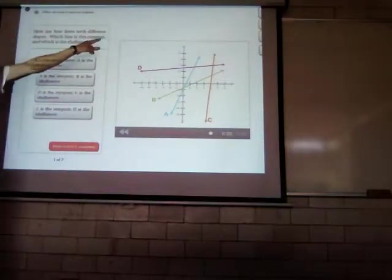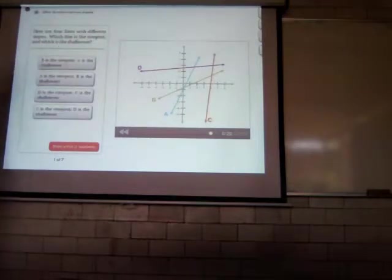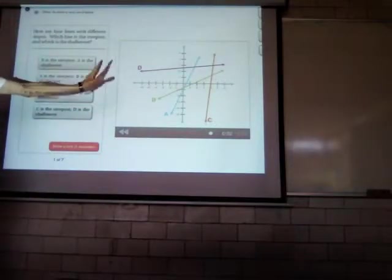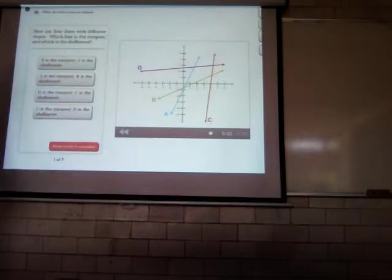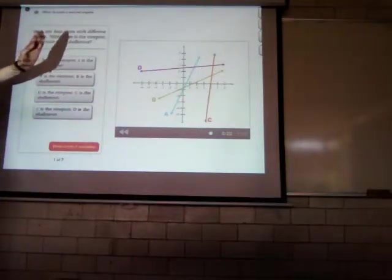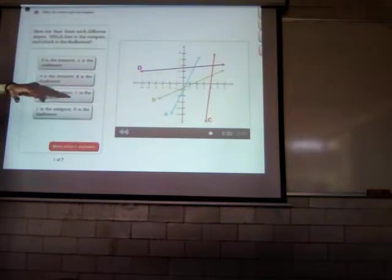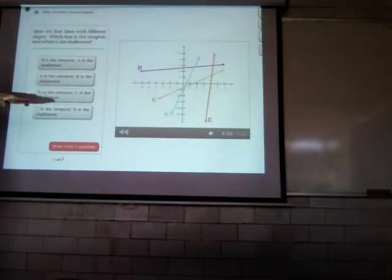Sería la más inclinada Y sería la más aplanada. ¿Cuál de las cuatro opciones está correcta? B es la más inclinada A es la más plana. O A es la más inclinada Y B es la más plana. O D es la más inclinada Y C es la más plana. O C es la más inclinada Y D es la más plana.